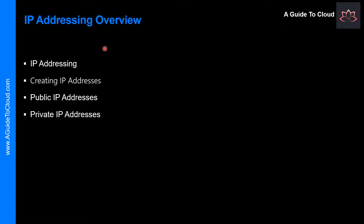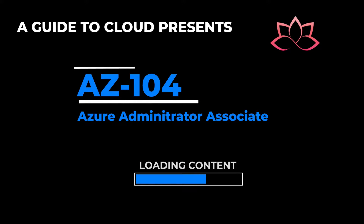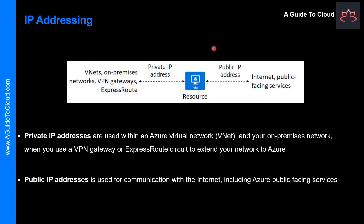Let's see what we're going to learn in this video. We're going to talk about IP addressing in Azure, how to create IP addresses, and what's the main difference between public and private IP address. You can assign IP addresses to Azure resources to communicate with other resources, your on-premises network, and the internet. There are two types of IP address: private IP address and public IP address. Virtual networks can contain both public and private IP address space.